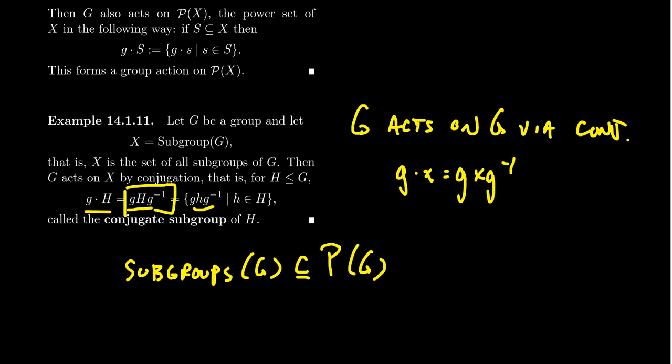So this power set of G is in fact a G set. It means that G acts upon it. This is a G set inside of a G set. So this is what we'd call a G subset. It's kind of like a subgroup. What's a subgroup? A subgroup is a group inside of another group for which the operation is just restriction from the overgroup.